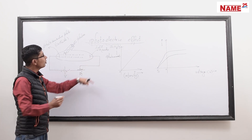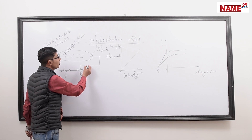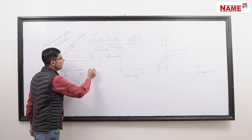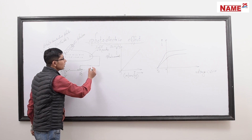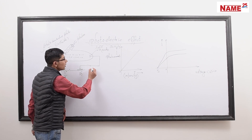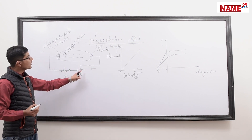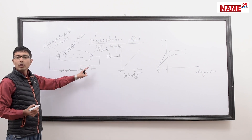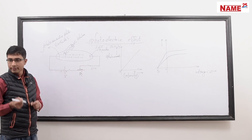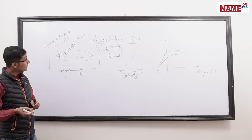The flow of electrons in this direction is called the current. The conventional current flows in the opposite direction to electron flow. So this is the direction of the photocurrent or photoelectric current.